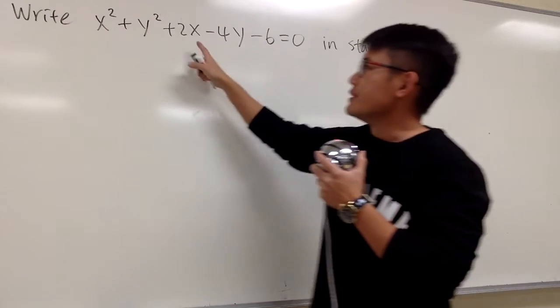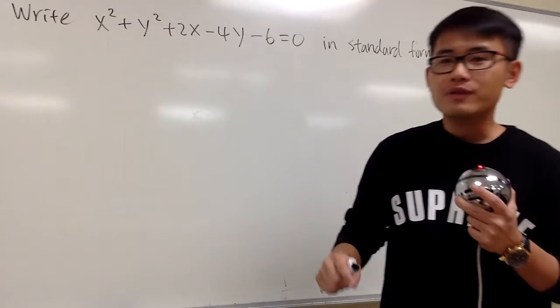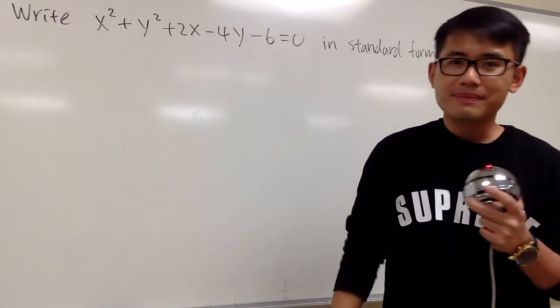You see that? We see the x twice, and we see the y twice. So that means we have to complete the square for both the x and y, okay?